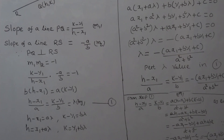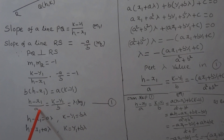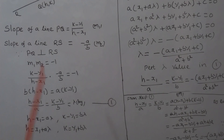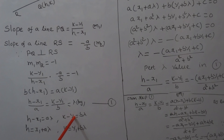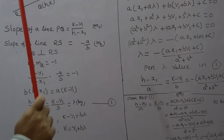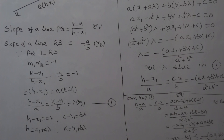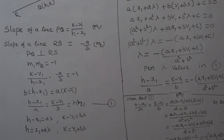Let this common ratio be lambda. So (H - X1)/A = lambda, which gives H - X1 = A·lambda, hence H = X1 + A·lambda. Similarly, (K - Y1)/B = lambda, which gives K - Y1 = B·lambda, so K = Y1 + B·lambda.